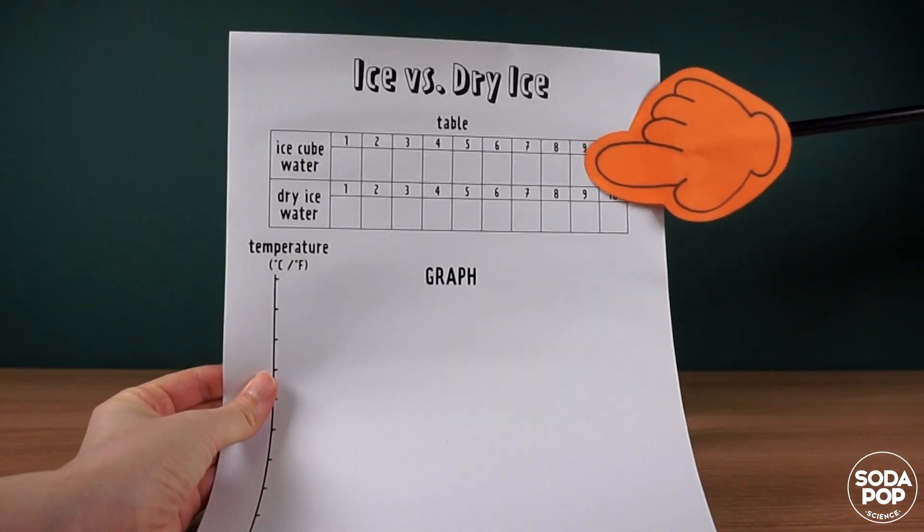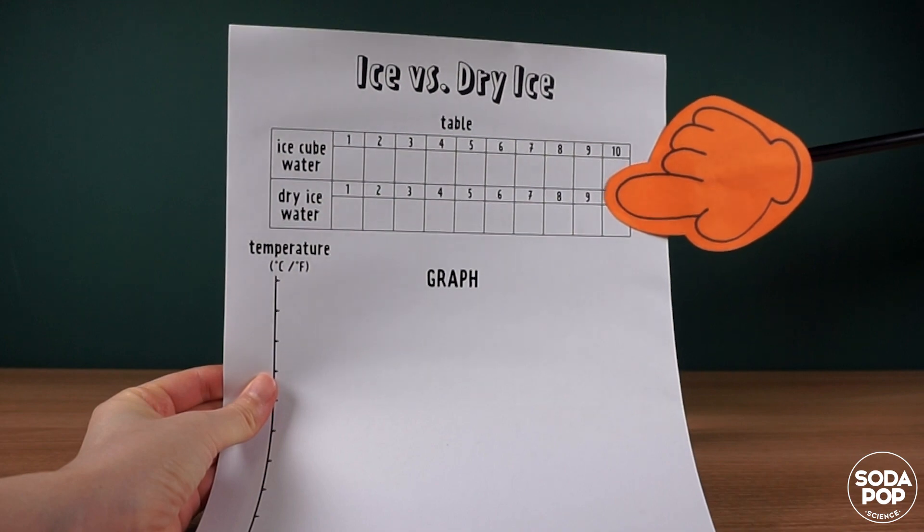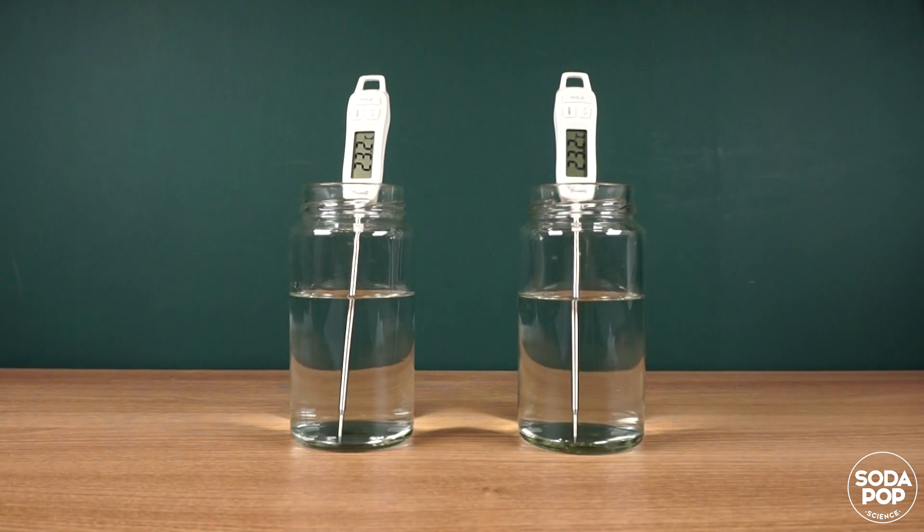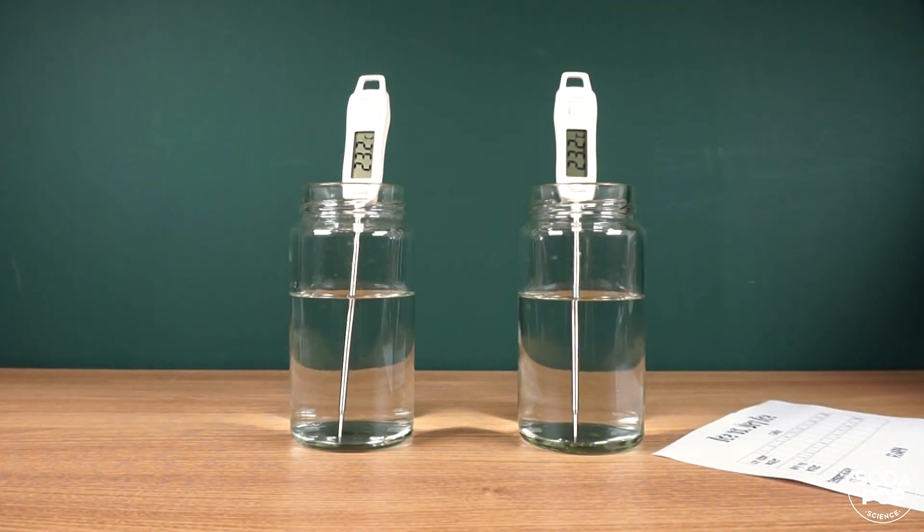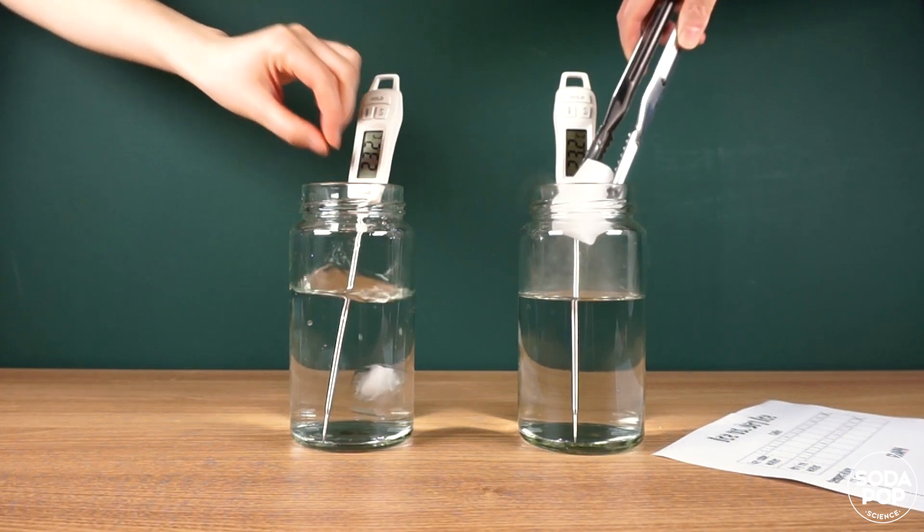From now on, we are going to measure and record the temperature every minute for 10 minutes. You can get the template from the description below. Now, add ice cubes to jar 1 and add dry ice to jar 2 at the same time.